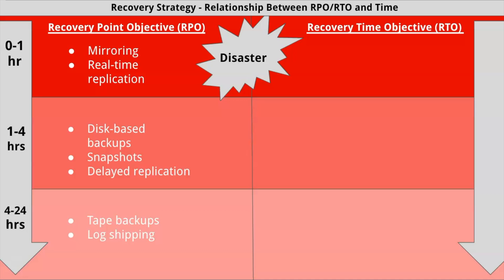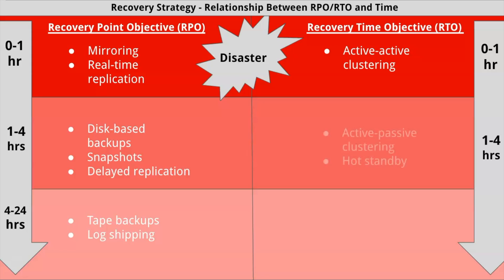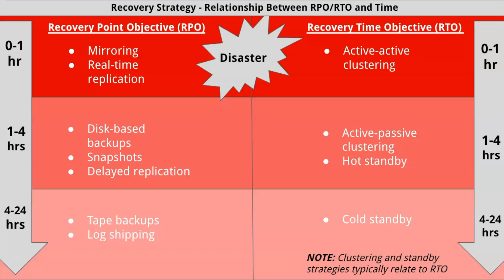Moving over to recovery time objective, RTO: within one hour from disaster, active-active clustering is normally used as a recovery strategy. Between one and four hours from disaster, active-passive clustering, or hot standby, is commonly used. Between four and 24 hours from disaster, cold standby is typically used. One note is that clustering and standby strategies are typically related to RTO, so if you see these words on the CEAS exam, it normally relates to recovery time objective as opposed to recovery point objective.